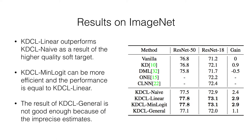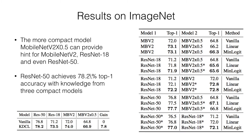The results show that KDCL surpasses state-of-the-art methods. KDCL-Linear and MinLogit outperform KDCL-Naive as a result of the higher-quality soft target. KDCL-MinLogit is more efficient and its performance is equal to KDCL-Linear. The result of KDCL-General is not good enough because one epoch for ImageNet contains too many examples, leading to imprecise estimates of the ensemble weight. We conduct experiments on various architectures. The results show that the more compact model MobileNet-V2 with 0.5 width provides hints for MobileNet-V2, ResNet-18, and even ResNet-50. If we ensemble more models, the improvement is further amplified.